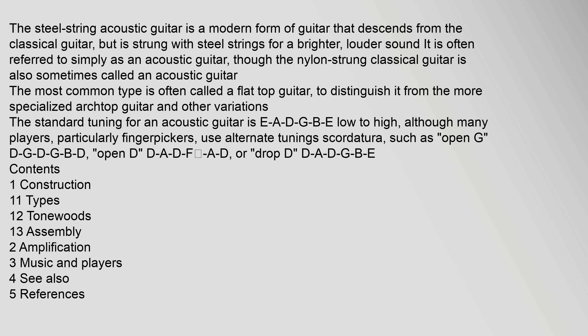To distinguish it from the more specialized archtop guitar and other variations, the standard tuning for an acoustic guitar is EADGBE low to high, although many players, particularly finger pickers, use alternate tunings such as Open G (DGDGBD), Open D (DADFsharpAD), or Drop D (DADGBE). Contents: 1 Construction, 1.1 Types, 1.2 Tonewoods, 1.3 Assembly, 2 Amplification, 3 Music and players, 4 See also, 5 References.